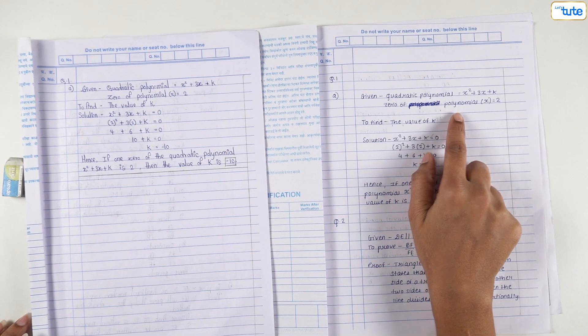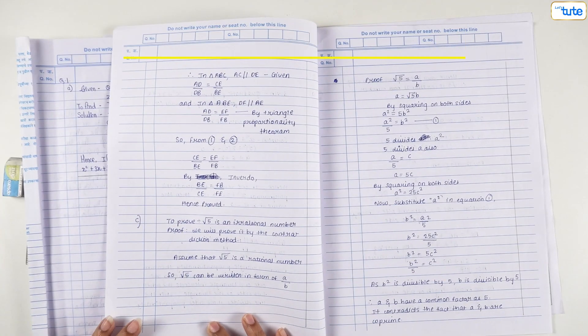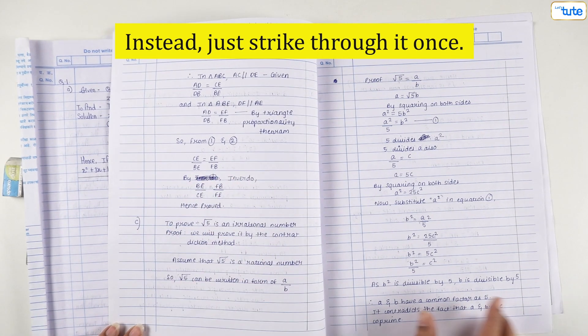In case of any errors or cancellations, do not strike it in a shabby manner. Instead, just strike through it once.